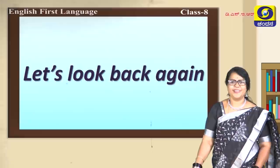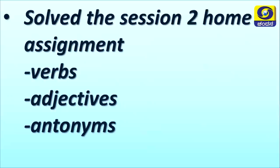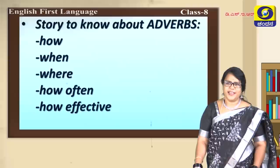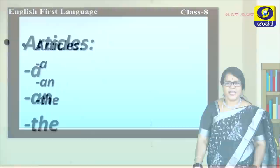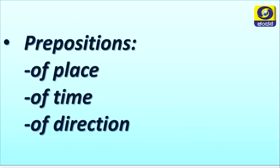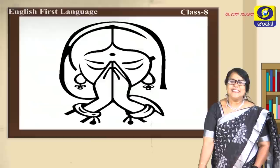Children, these were the things for today. Let's look back and recall what we covered in this session. We solved the session 2 home assignment covering verbs, adjectives, and antonyms. We used a story to know about adverbs — how, when, where, how often, and how effective the adverbs occur. Then about articles a, an, and the, and when they are to be used. Prepositions: prepositions of place, of time, of direction. And the writer of the day, George Bernard Shaw.